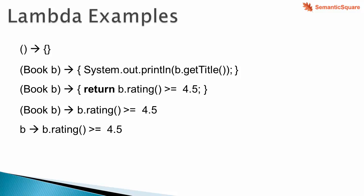Here is a further simplification, assuming the type of the method parameter can be inferred by the compiler. This would be the simplest form possible. Note that there are no parentheses here, as there is only a single parameter — parentheses are not required if we have just a single parameter. Parentheses are mandatory if we have more than one parameter or no parameters at all.